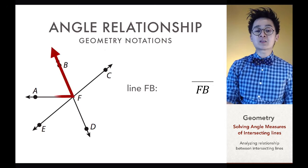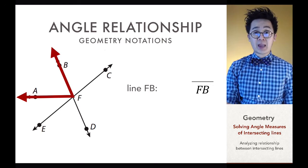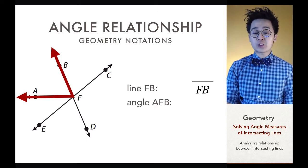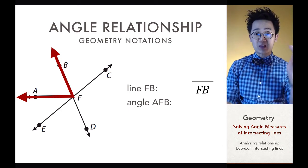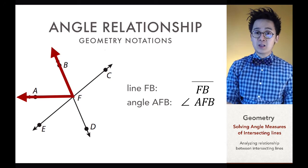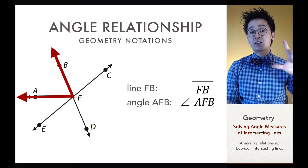Now let's describe an angle in this diagram. The three points connecting this figure are letters A, F, and B. In geometry, we can call this angle AFB, or you can also write it as angle BFA. As long as F is in the middle — because F is the point that makes up the angle measure — we can write it using the angle symbol in geometry.